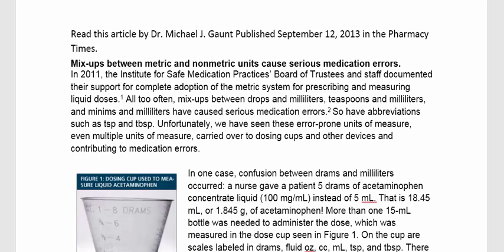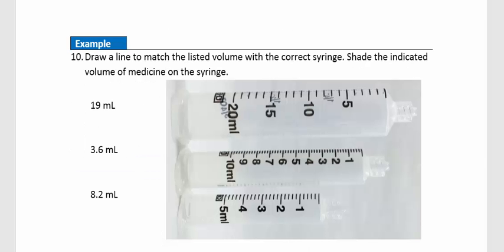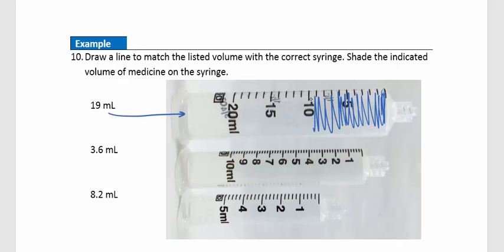Example 10: Draw a line to match the listed volume with the correct syringe and shade the indicated volume. The principle is to always use the smallest syringe possible, since smaller doses require more precise measurement. For 19 mL, we use a 20 mL syringe and shade it right up to the 19 mL mark.